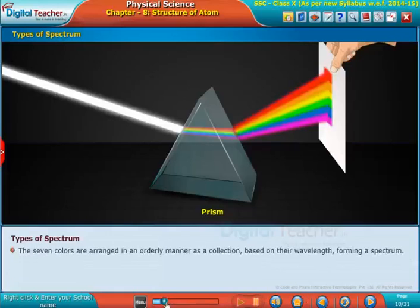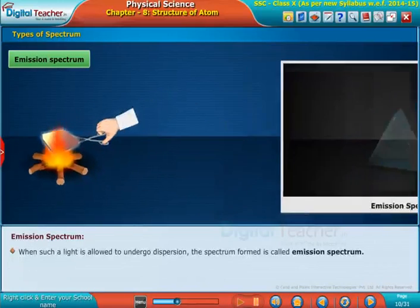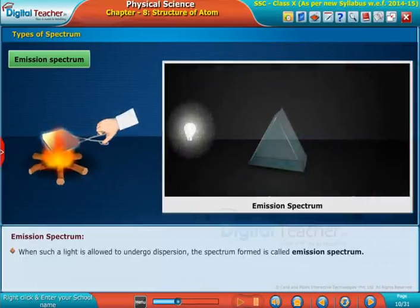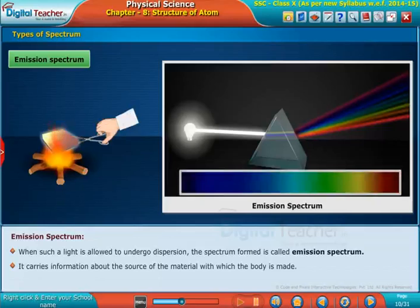When such light from a body is allowed to undergo dispersion, the spectrum formed is called an emission spectrum. It carries information about the source and the material with which the body is made.